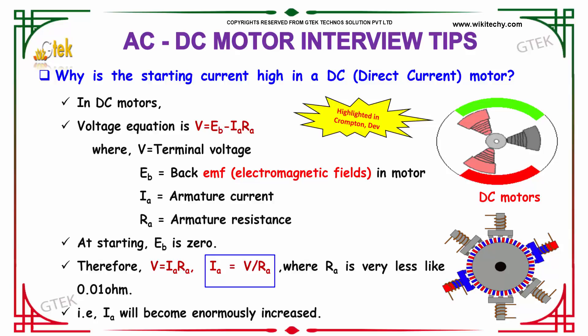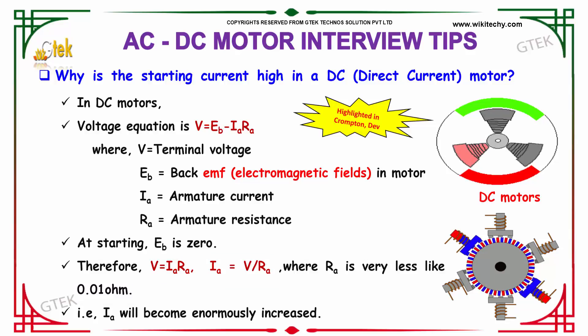Having IA on the left side and taking RA as the denominator of V, where RA is very less like 0.01 Ohm, IA will become enormously increased. This is the reason why the starting current is high in the DC motor.